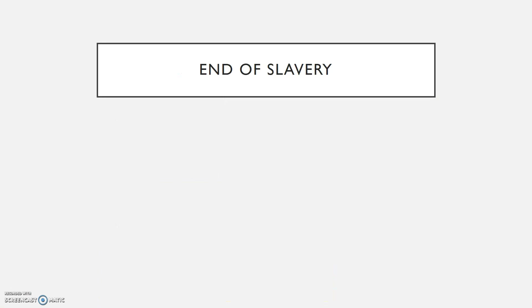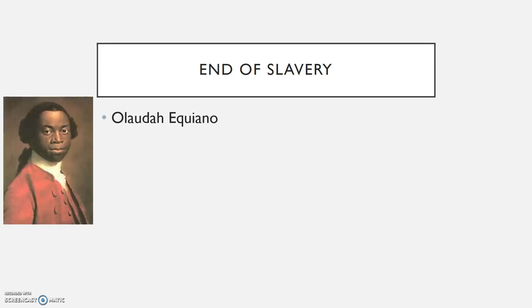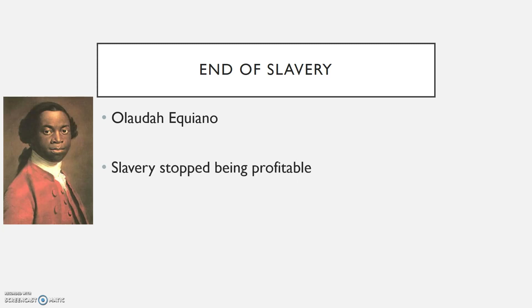Slavery was not going to last forever. Calls for abolition go back to the beginning of the Atlantic slave trade, but really picked up during the Enlightenment and after the American and French revolutions. Claims that all men are created equal gave fuel to the abolitionist cause, and this cause was not only taken up by whites. Africans, while it was difficult due to their disenfranchised position and lack of voice, sometimes became very powerful advocates for ending slavery. An example is Olaudah Equiano, born a slave in what is today Nigeria, captured at age 10, who worked on plantations in the Caribbean and North America before buying his freedom in 1766. His autobiography became a bestseller and he spoke passionately on the evils of slavery. But what ultimately convinced people to end slavery was that it stopped being profitable.